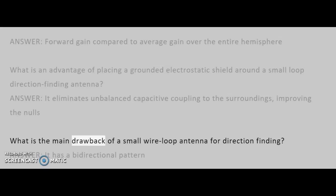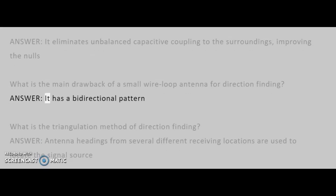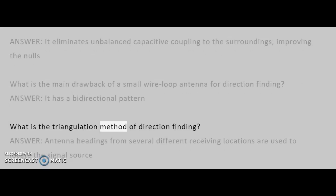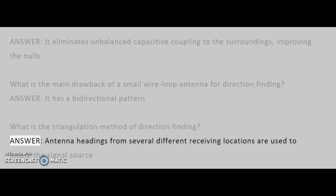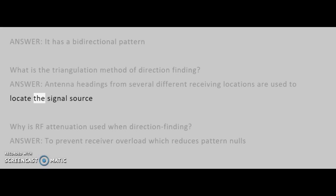What is the main drawback of a small wire loop antenna for direction finding? Answer: It has a bidirectional pattern. What is the triangulation method of direction finding? Answer: Antenna headings from several different receiving locations are used to locate the signal source.